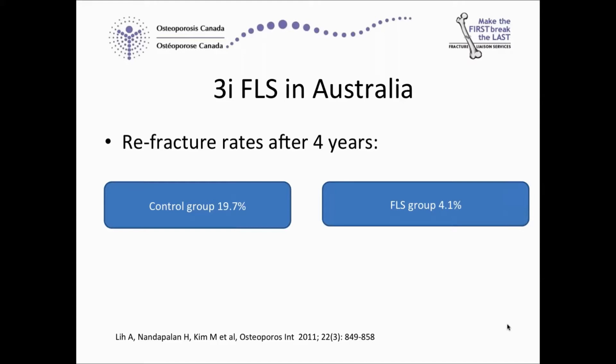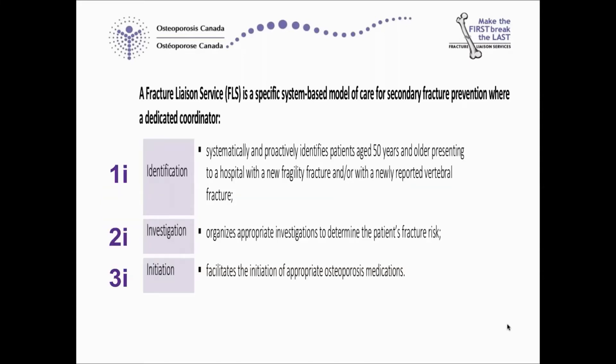And finally, this 3i FLS in Australia, which was a prospective cohort study, found that refracture rates after four years dropped dramatically, going from 19.7% in their control group to 4.1% in their FLS group — huge decreases in refracture rates.